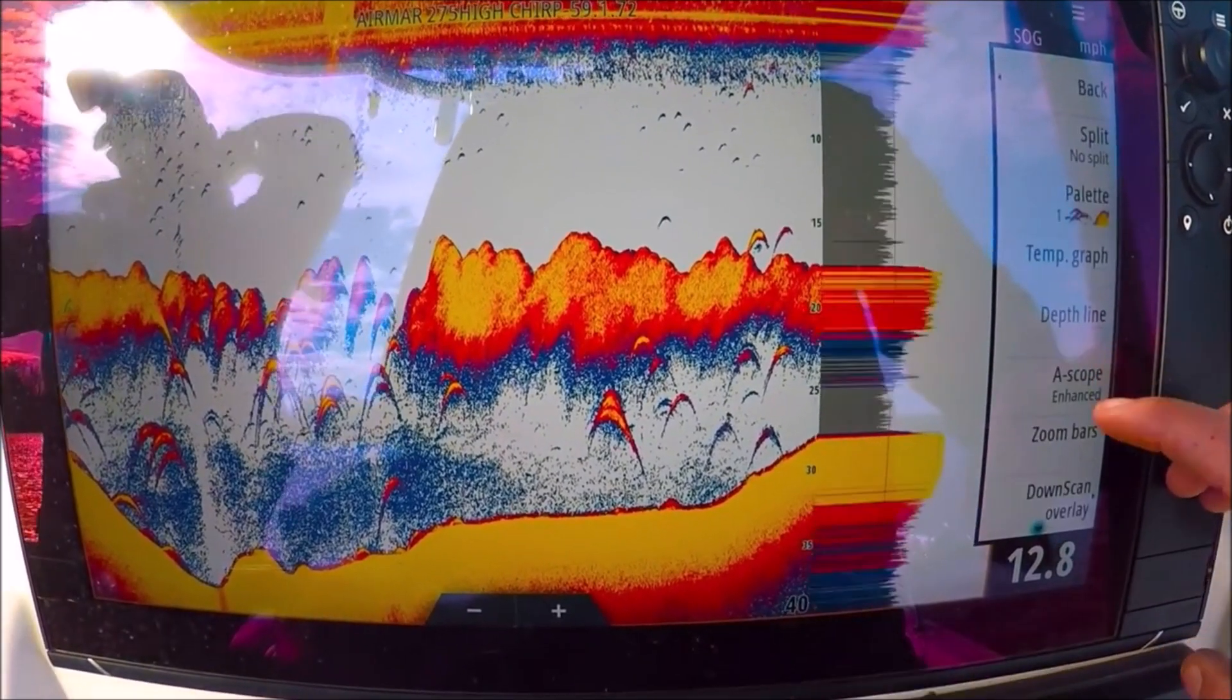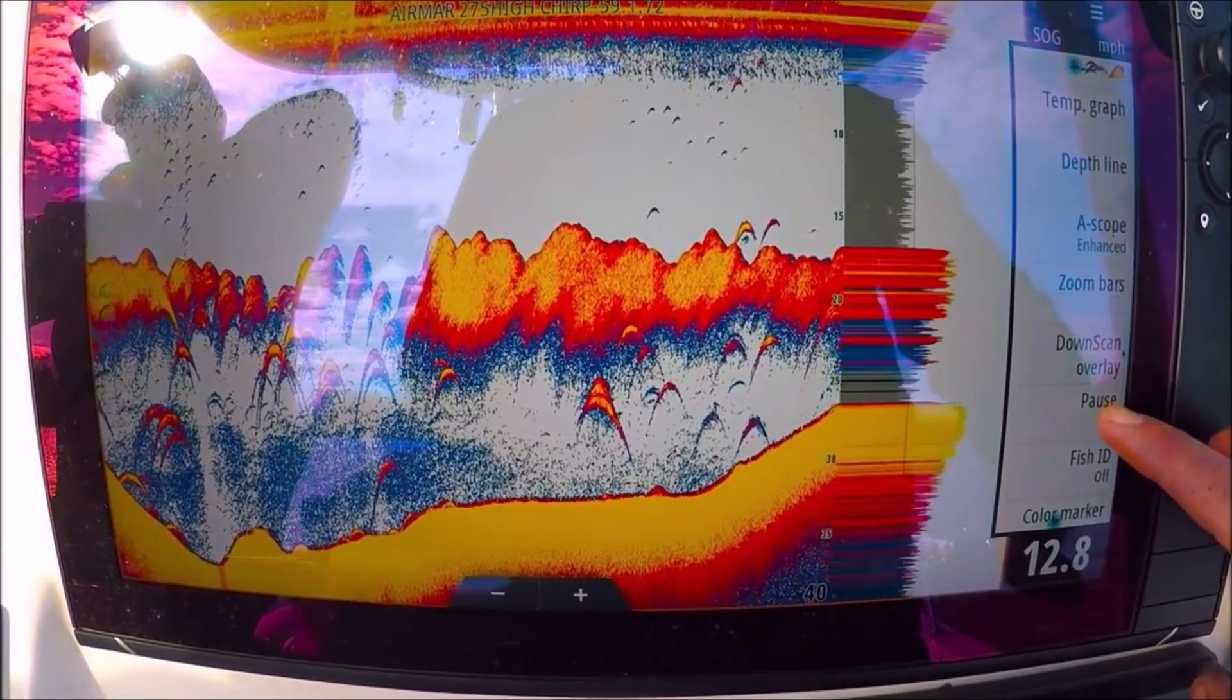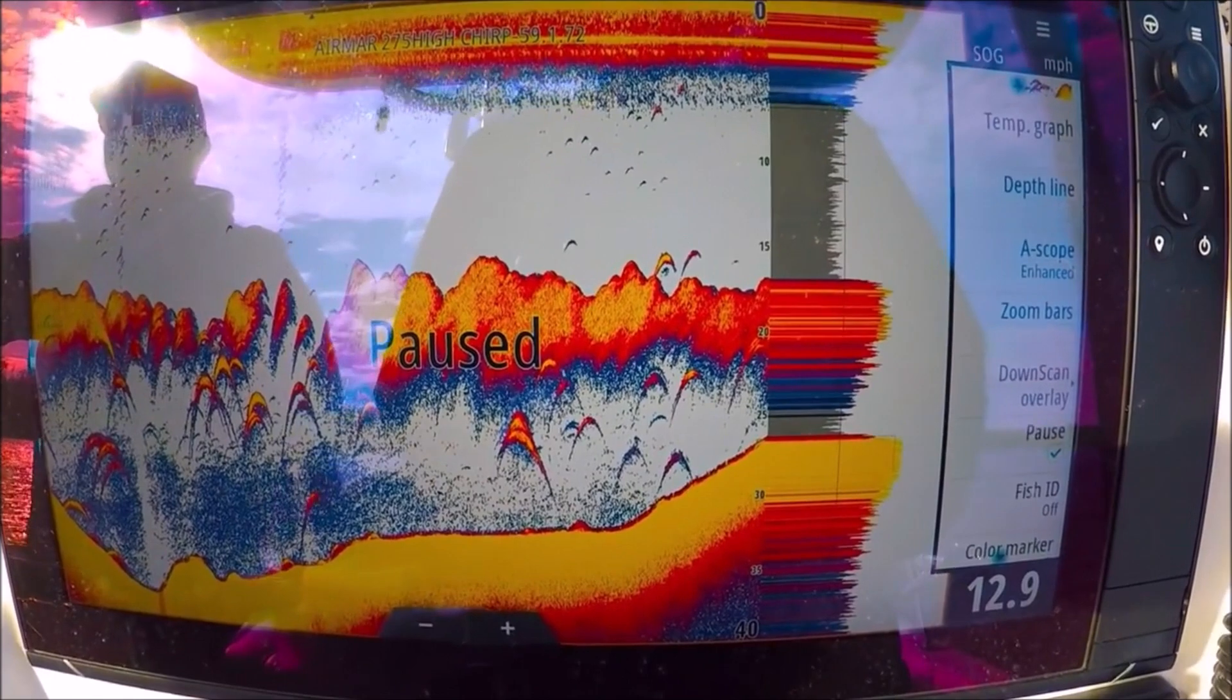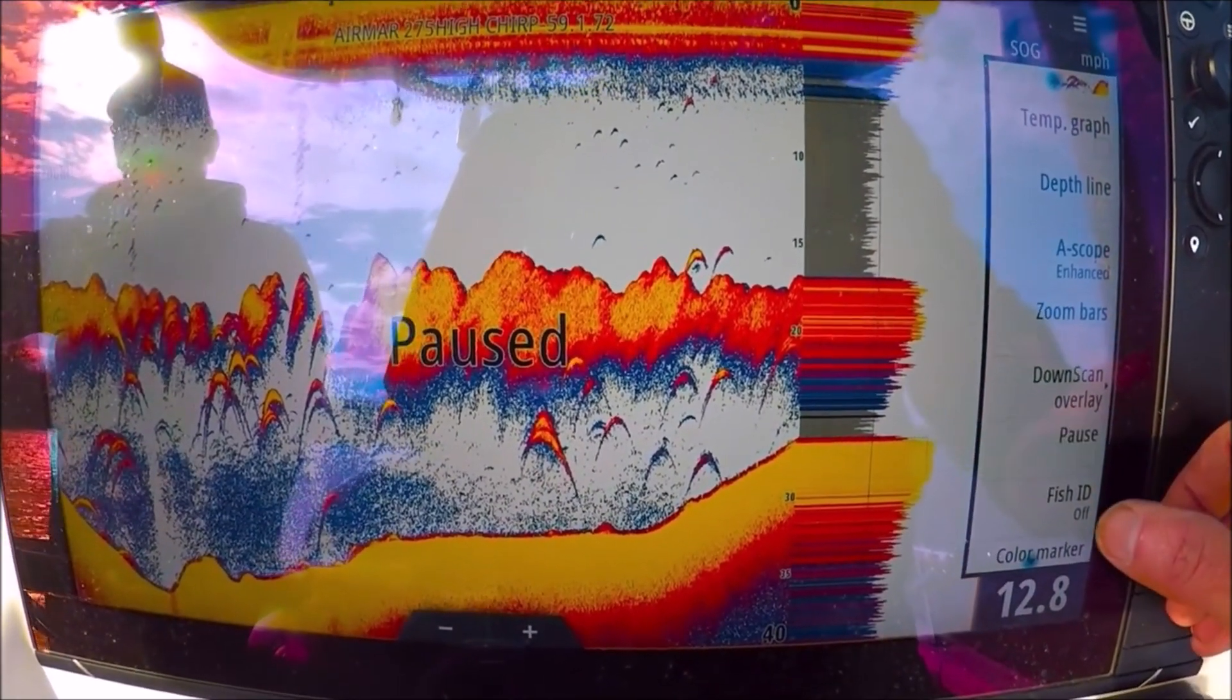Pause. This just pauses our sonar here. This is really good to do if you're going to sit in your driveway and work on your machine. If you have a chirp transducer, it's never good to run them for a long time out of the water. They can overheat and be damaged, so that's why you have that pause option. Fish ID off.